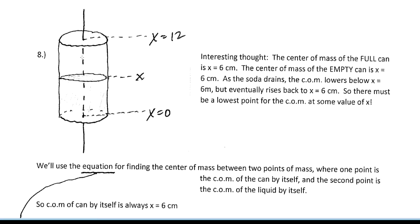But when the can is in the process of emptying out, it is not symmetrical from top to bottom, so the center of mass is not in the center. The center of mass lowers, but then it has to go back to x equals 6 eventually. That means at some point it must be at its lowest location — and that's what we're looking for.